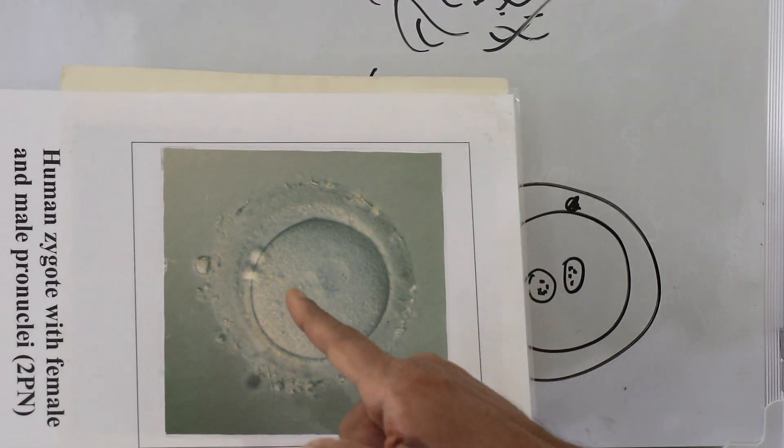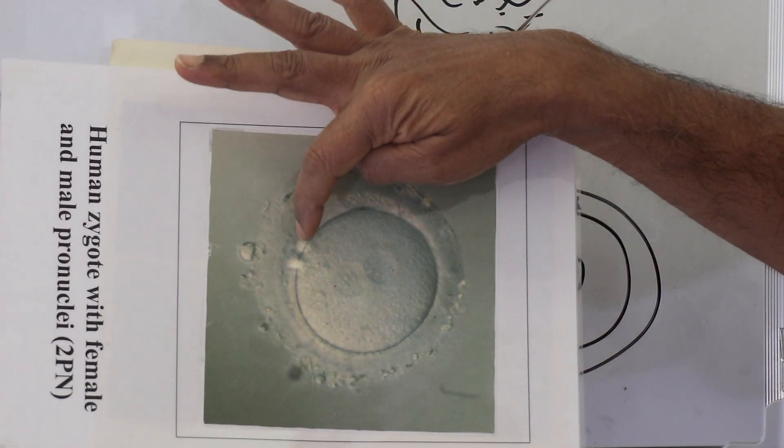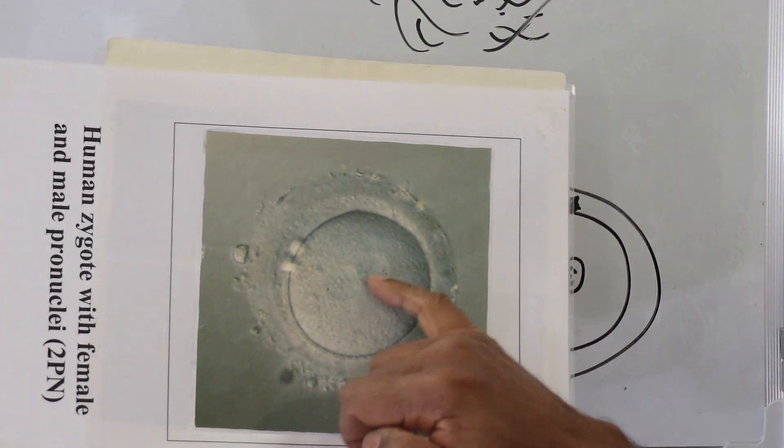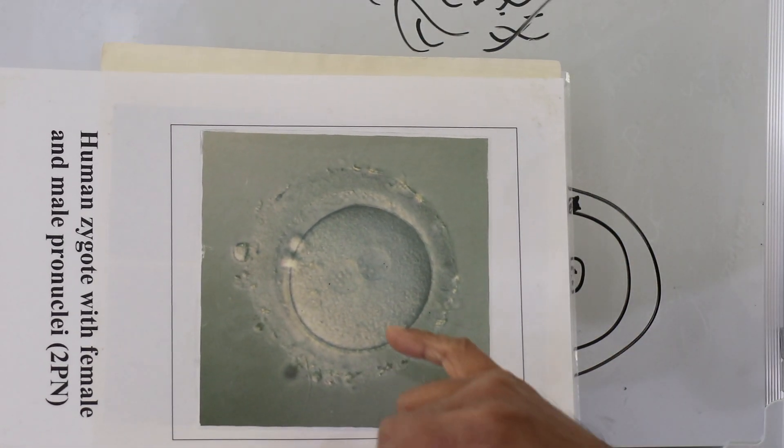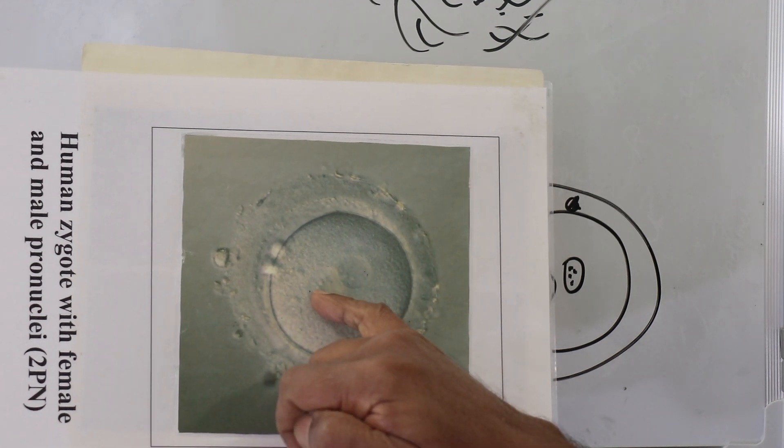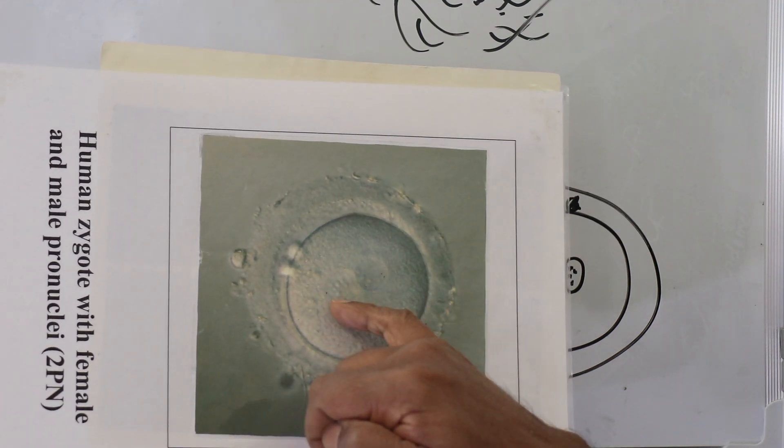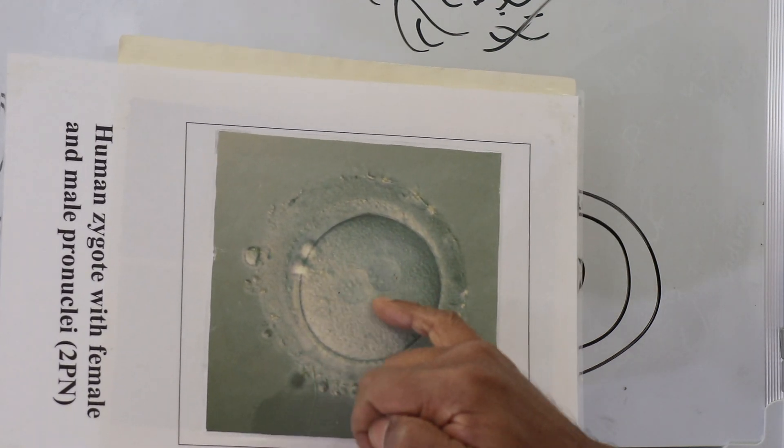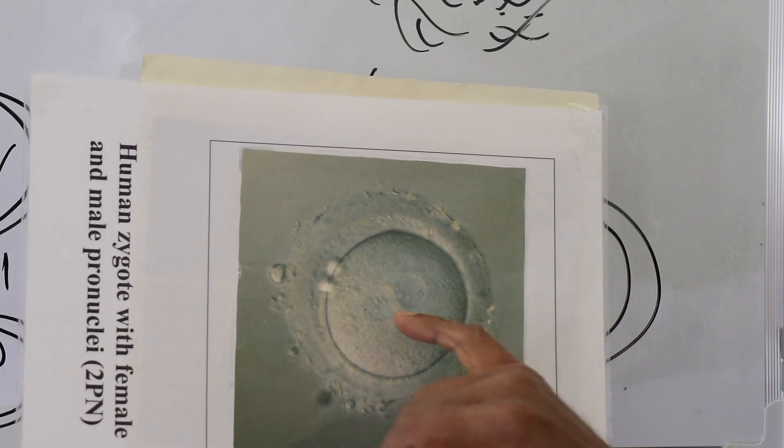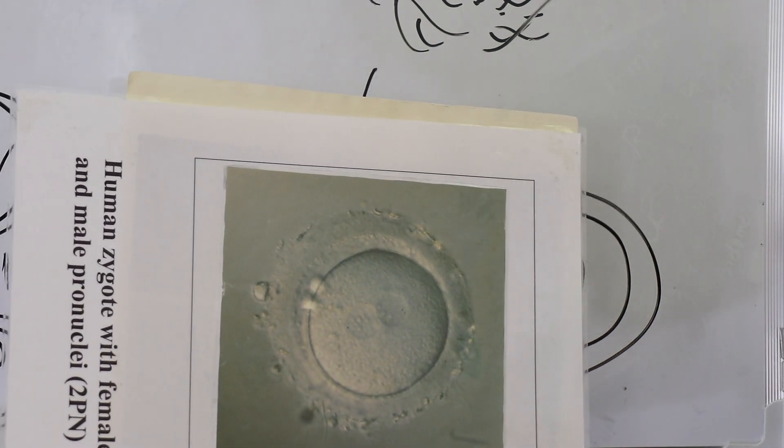If it's fertilized, we are going to see two polar bodies and two nuclei. And if you look carefully inside the nucleus, you can see nucleolus. So that is the difference between a pronucleus and a vesicle. We can easily identify that. That's normal fertilization.